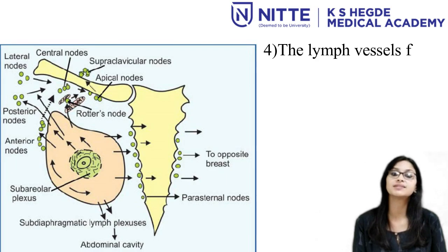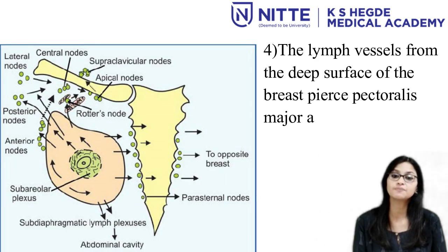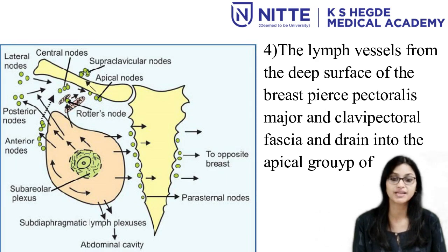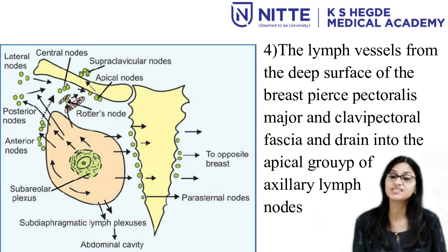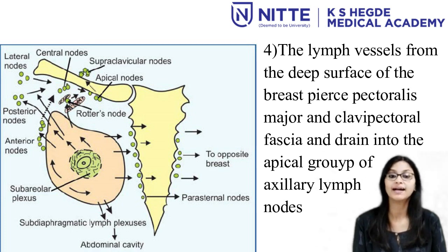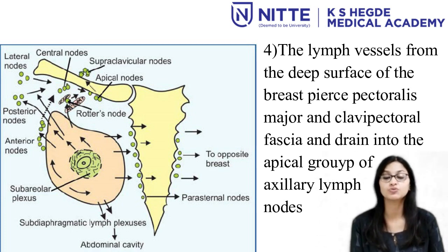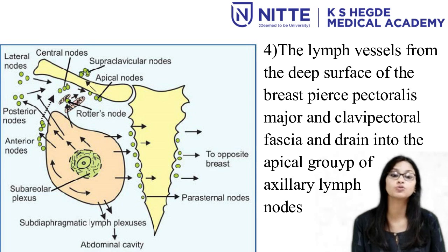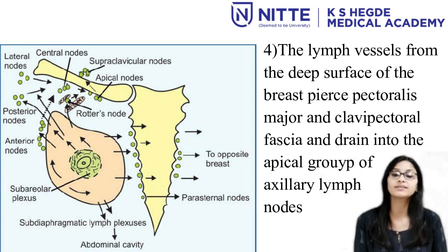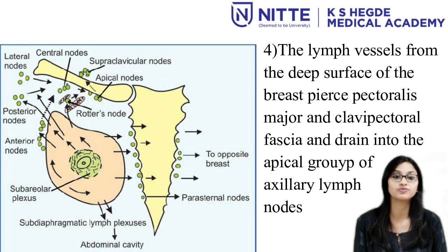The lymph vessels from the deep surface of the breast pierce the pectoralis major and the clavipectoral fascia and drain into the apical group of axillary lymph nodes. That completes the lymphatics of the breast.